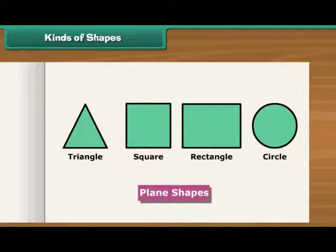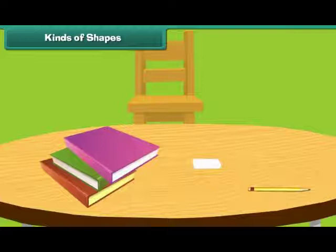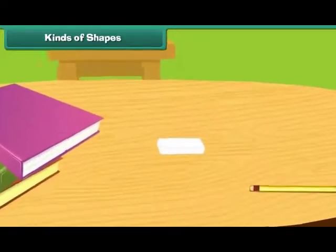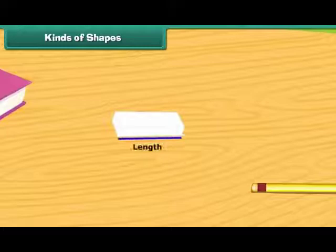Plain shapes are also known as 2D objects. Solid shapes are also known as 3D objects. All 3D objects have depth which 2D objects do not have.